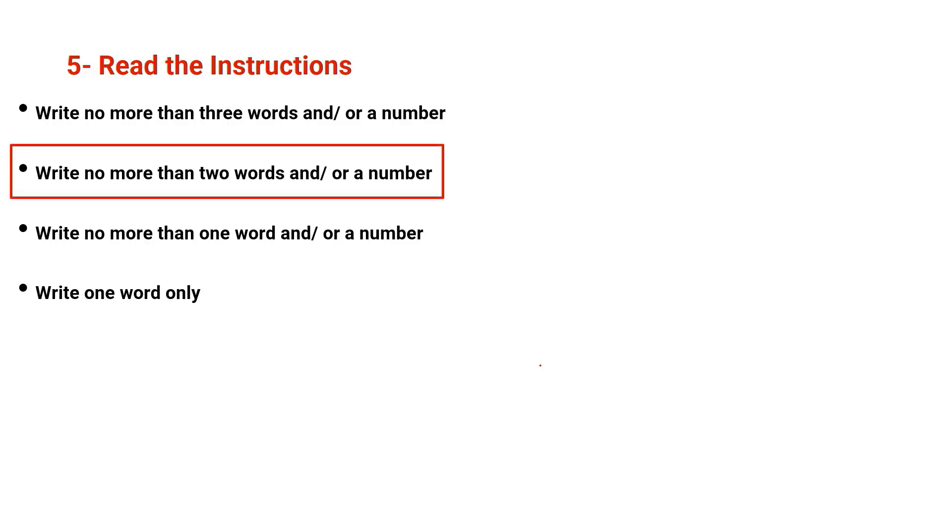So imagine that you have the question telling you write no more than two words and/or a number. Here you have to understand the options. If it tells you no more than two words, so here you have to consider the options you have: maximum two words. So you can have two words and a number, or you can have only two words. You can have less, you can have one word and a number, or you can have only one word. And then you can have a number alone.